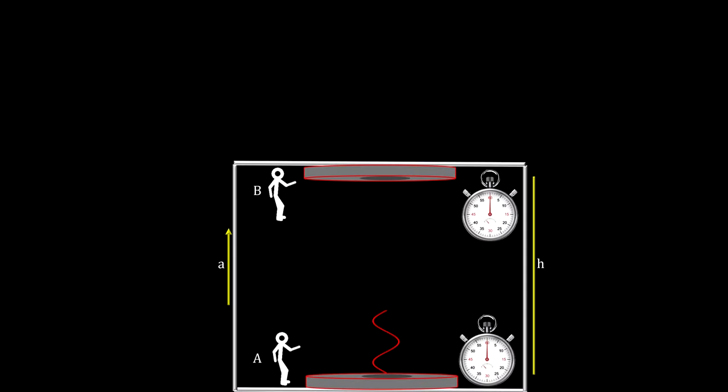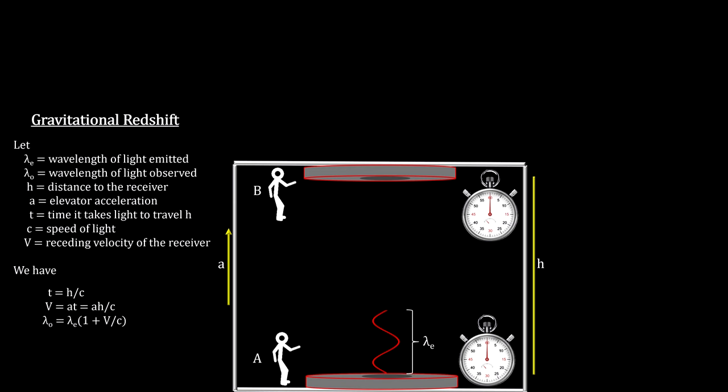One of the most dramatic consequences of general relativity is how gravitational redshift leads directly to the conclusion that a gravitational field slows time. We'll use the elevator thought experiment to illustrate how clocks closer to the source of gravity run slower than those further away.